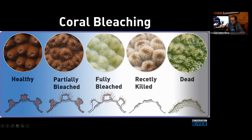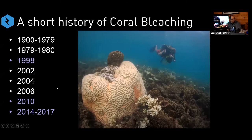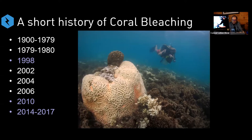So we end up with dead coral that eventually gets covered over in filamentous algae. Coral bleaching is actually a natural phenomenon — it's always happened to some degree on coral reefs. Looking at the scientific literature, we can find isolated reports of coral bleaching between 1900 and 1979, but generally these were in tide pools or involved a couple of corals of a single species around the lowest tide of the year.